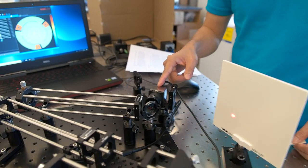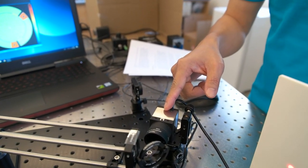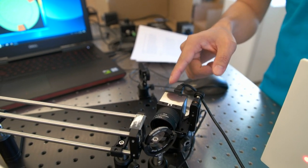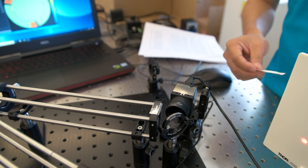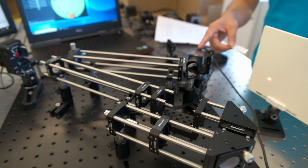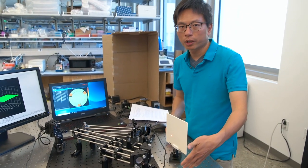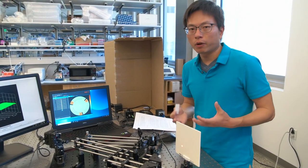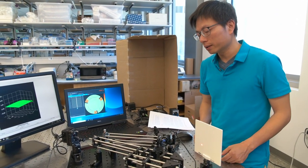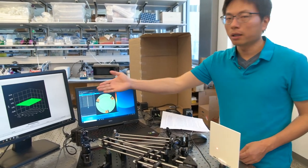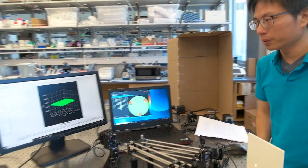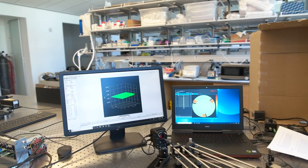Inside the wavefront sensor, there is a micro-lens array and a camera. The detected signal from the camera is sent to a computer under the optical table so that the shape of the wavefront can be calculated and displayed on the computer monitor.